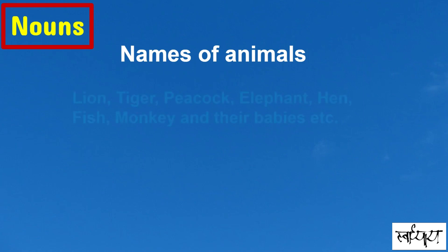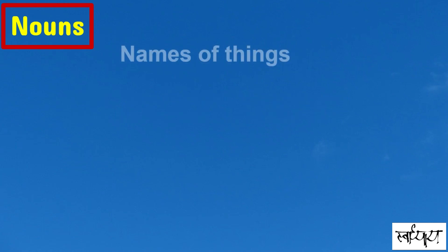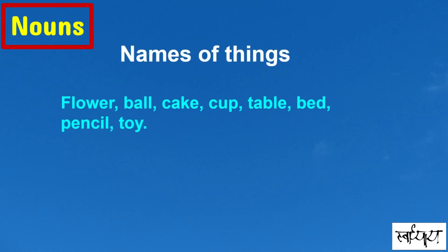Names of animals like lion, tiger, peacock, elephant, hen, fish, monkey, and the names of their babies. Names of things like flower, ball, cake, cup, table, bed, pencil, toy, and many more. These are all nouns.